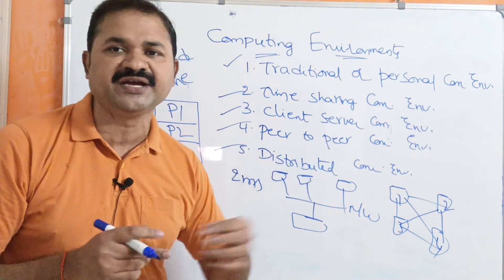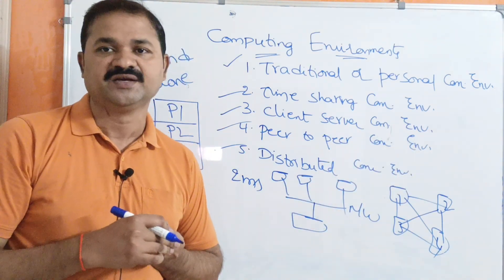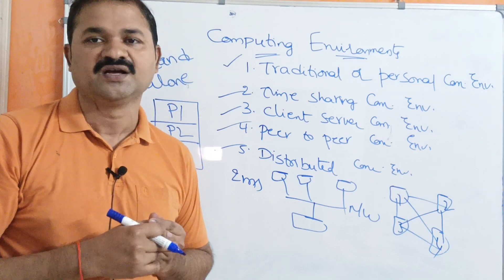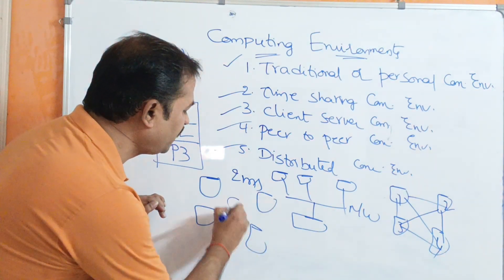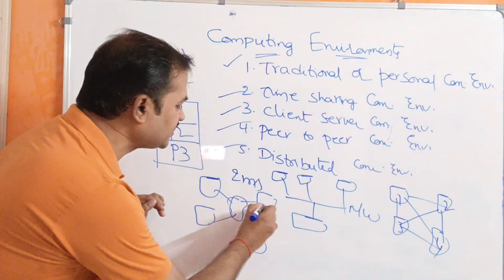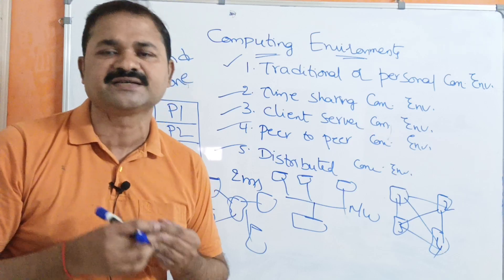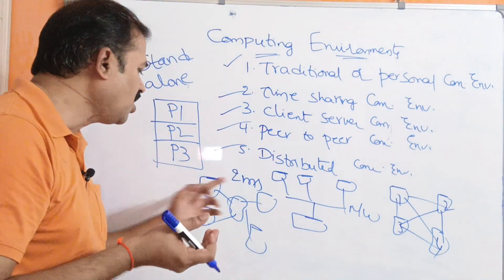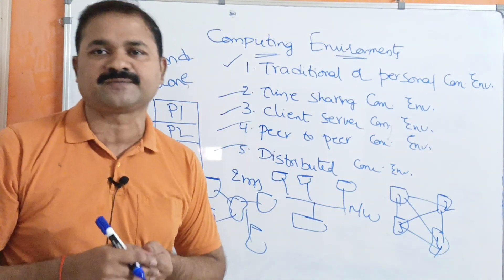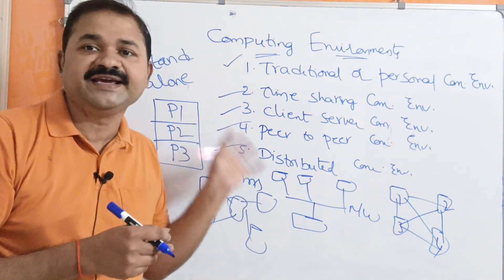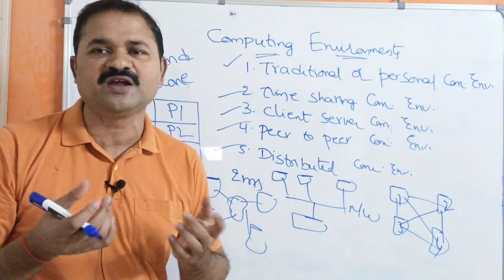The last one is distributed computing environment, which can also be called a distributed system. Here we have multiple systems all connected over a network. If you want to develop a large application, that application will be distributed among these computers. Each computer performs some task and the information from each computer is shared among all the computers.